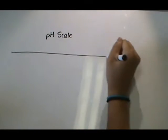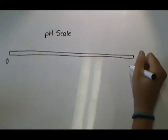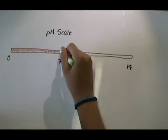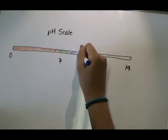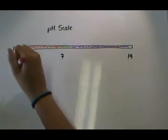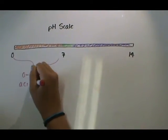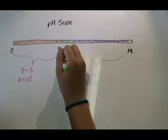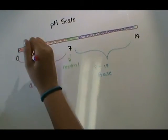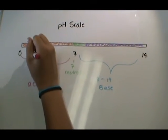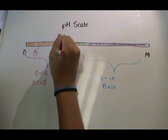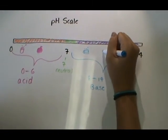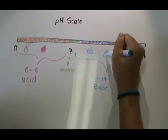This is a pH scale. pH is a measure of how acidic or basic something is. The scale ranges from 0 to 14. Anything with a pH value of 0 to 6 is considered acidic, while a value of 8 to 14 is basic. If a substance has a pH of 7, it is neutral since it is neither acidic nor basic. Acidic substances include sodas and fruits. Basic substances can be soap or bleach. Water tends to be neutral.